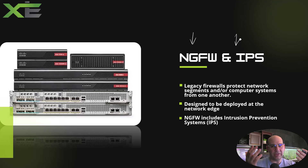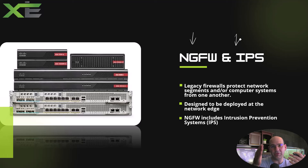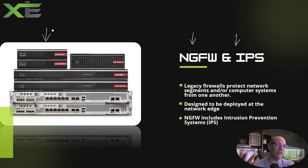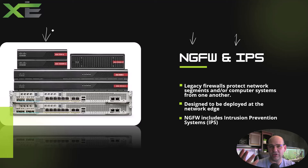Traditionally we deploy firewalls at the edge of our network — at the very edge of our organization — and we use it as a gateway between the internet and our internal organization. That's really why they come in different shapes and sizes, because they have different roles. You can have smaller firewalls for home office or branch office networks, and much larger firewalls for corporate networks and data centers. Throughput — how much data we're sending through — determines the size we need.